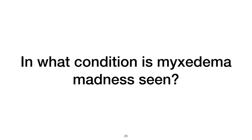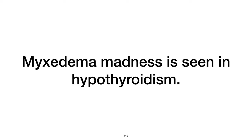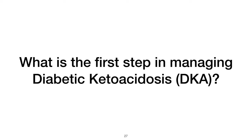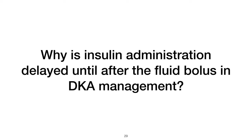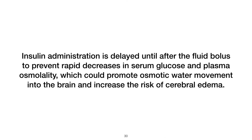In what condition is myxedema madness seen? Myxedema madness is seen in hypothyroidism. What is the first step in managing diabetic ketoacidosis (DKA)? The first step in managing DKA is starting the patient on intravenous normal saline 0.9%. Insulin administration is delayed until after the fluid bolus to prevent rapid decreases in serum glucose and plasma osmolality, which could promote osmotic water movement into the brain and increase the risk of cerebral edema.